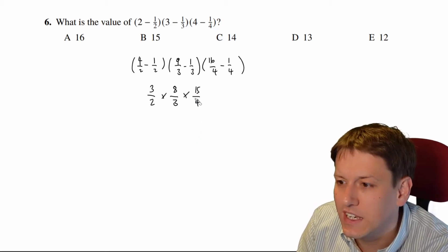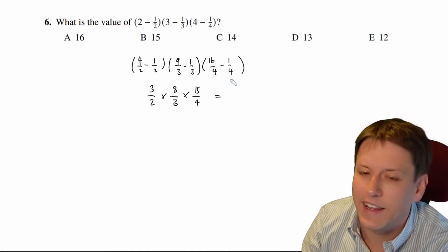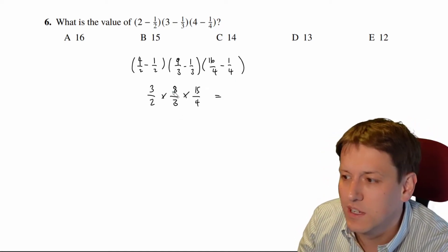And you could now do 3 times 8 times 15 and 2 times 3 times 4, get a big fraction and then simplify it down. But you can save yourself a lot of time here if you spot the cancellation that's going to happen before you multiply.